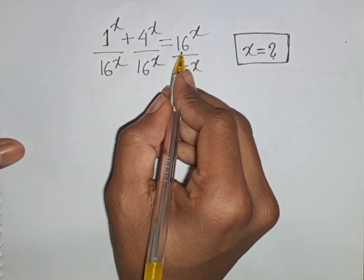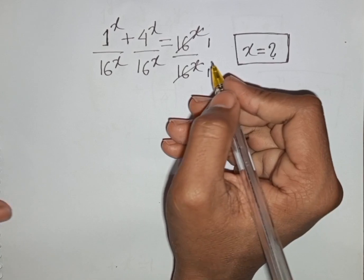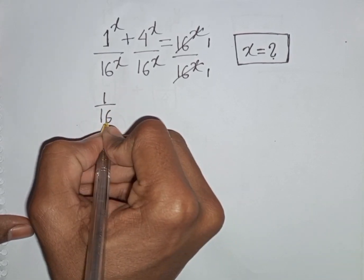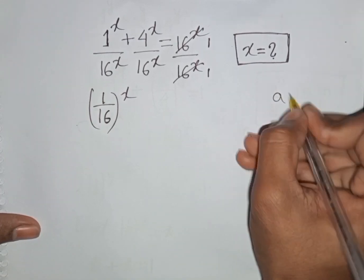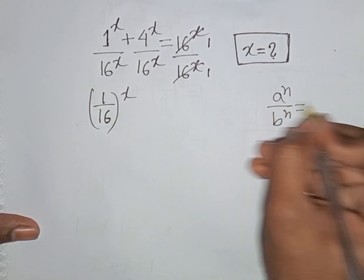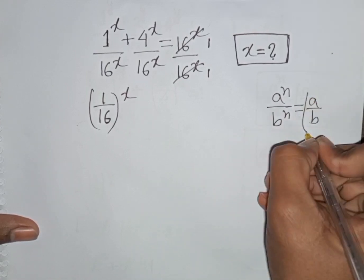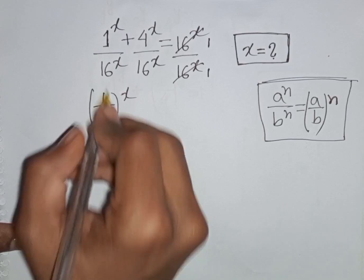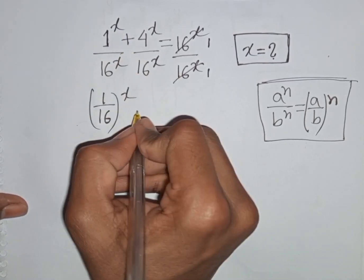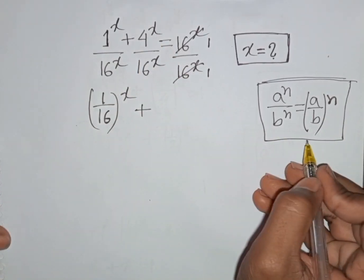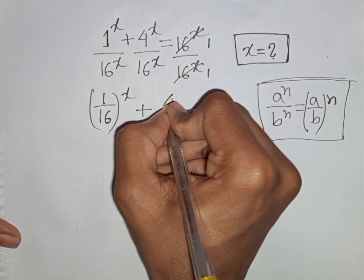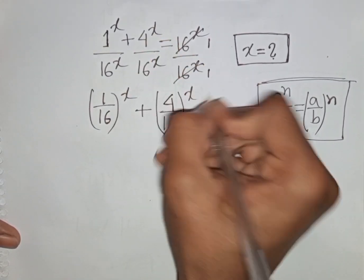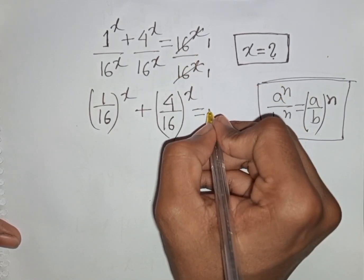Now we see the 16^x terms will cancel. Using the exponential rule — a^n divided by b^n equals (a/b)^n — since both terms share the same power x but different bases, we can write (1/16)^x + (4/16)^x = 1.